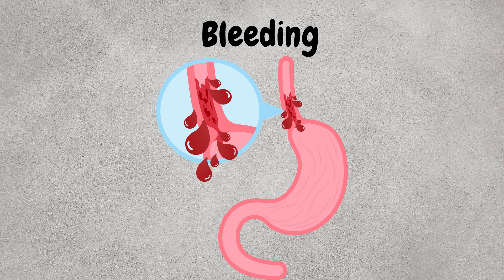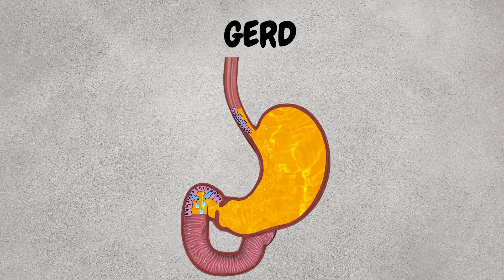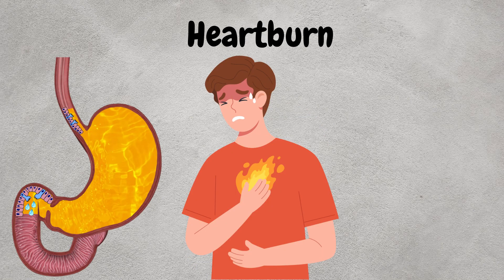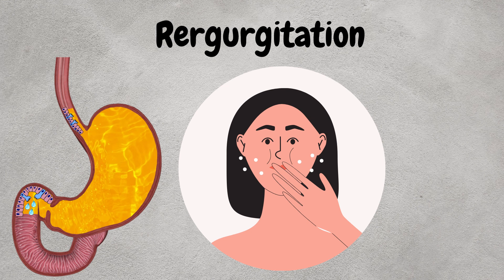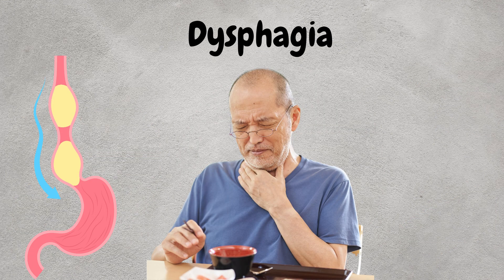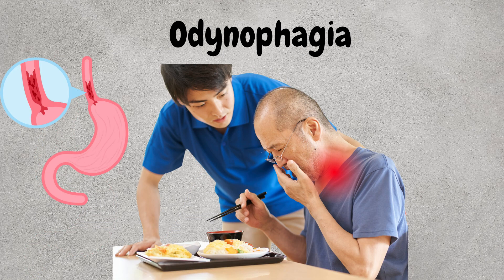Now let us see the signs and symptoms. Barrett's esophagus itself often does not cause any symptoms. However, individuals with Barrett's esophagus may experience symptoms related to GERD. Common symptoms include heartburn — a burning sensation or discomfort in the chest, usually after eating or when lying down — and regurgitation, where sour or bitter-tasting fluid comes back into the mouth or throat, especially when bending over or lying down. Dysphagia, meaning difficulty swallowing, may feel like food is sticking in the throat or chest, and this happens due to formation of esophageal stricture. Odynophagia, or painful swallowing, may also be experienced by some patients due to Barrett's ulceration.